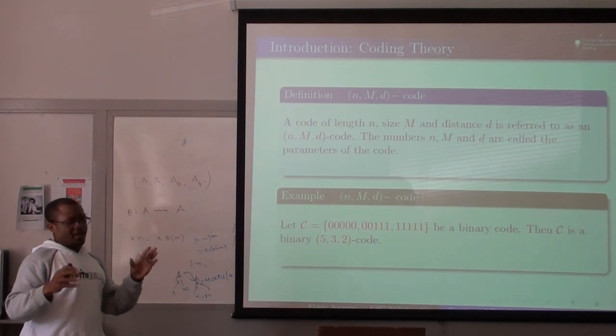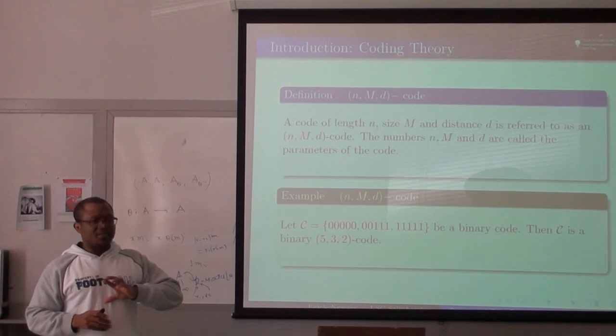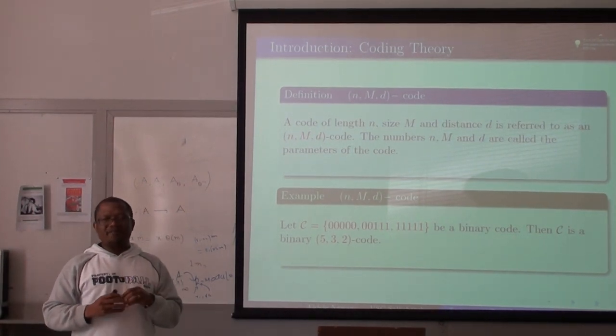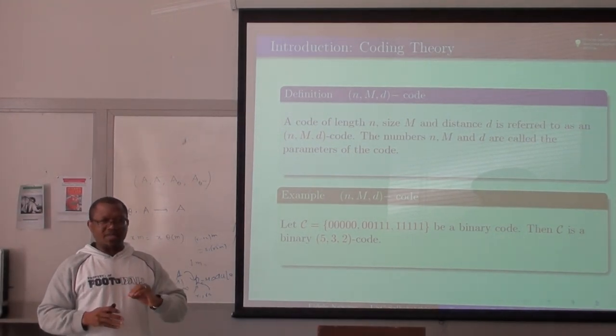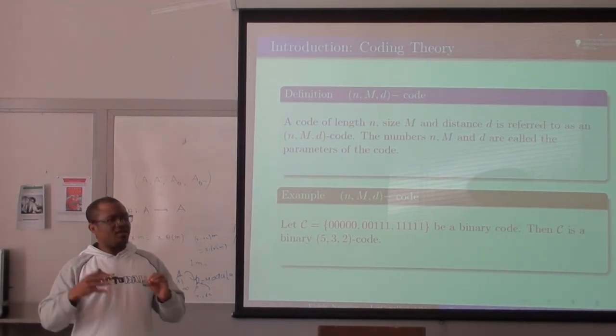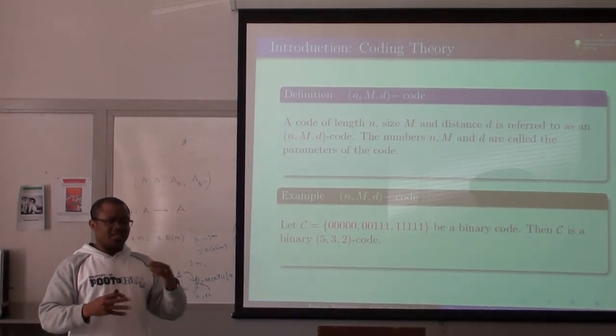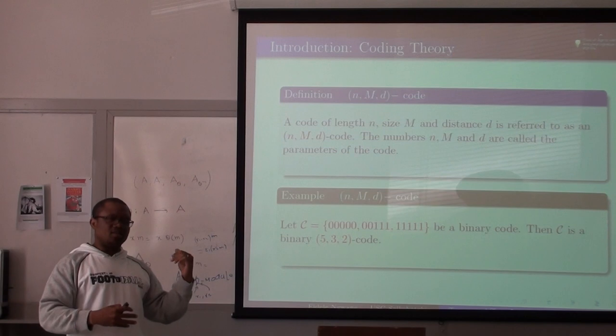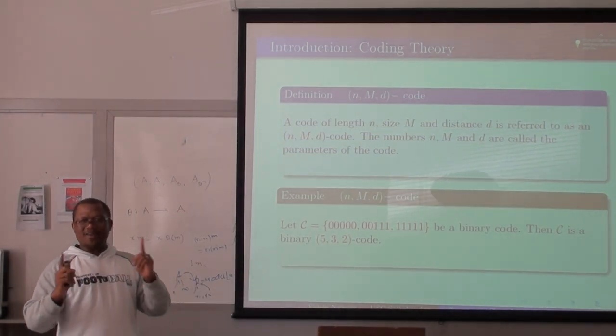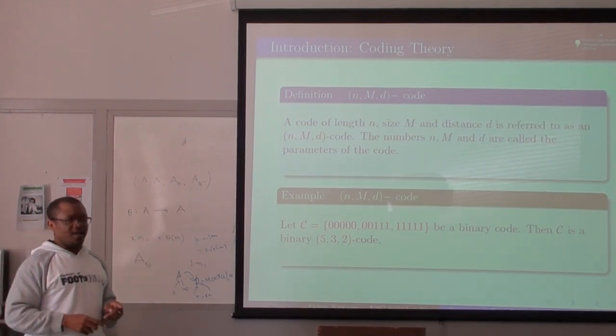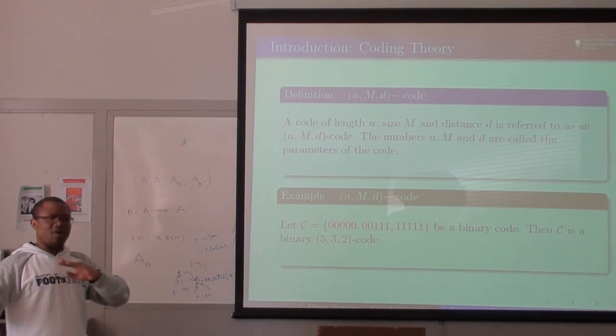You might wonder why coding is useful. Think of the secret service. You want to send a message. Usually, you have the source encoding. Somebody has a message, you encode that message, you send it through a channel. The channel encodes it, sends it through. When it gets out of the channel, the channel decodes it, and then it gets to the receiver who also decodes it. It has a lot to do with transmission of information from one place to the other.